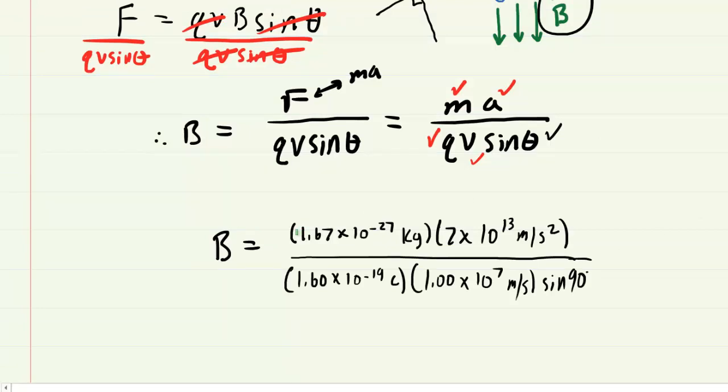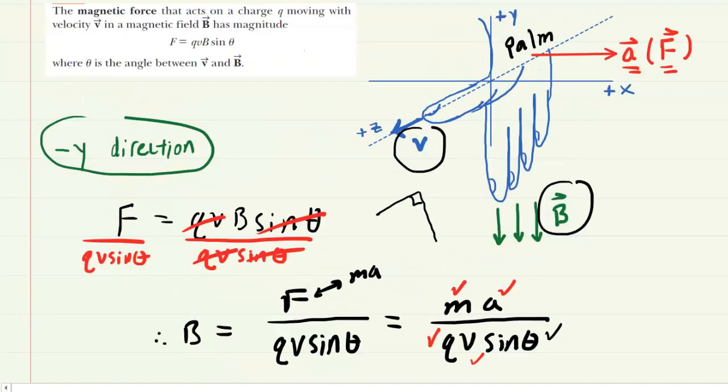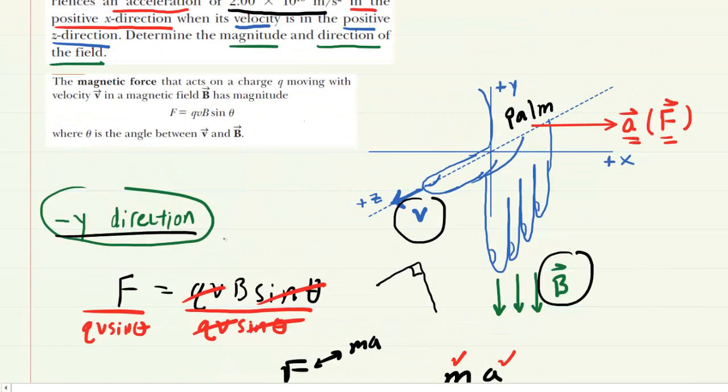We've gone ahead and plugged in all the known values. Remember the mass and the charge are values we know. We can look them up in our textbook. We crunch this down on our calculators. Make sure your calculator is in degree mode. And we get approximately 0.0209. And then the standard unit of magnetic field is Tesla. So this will be the correct answer for the magnitude. And then again the direction was in the negative y direction.